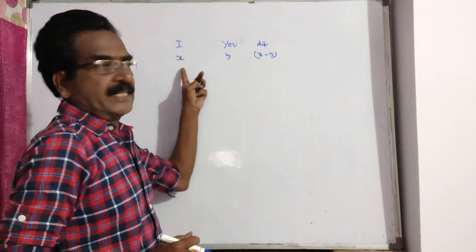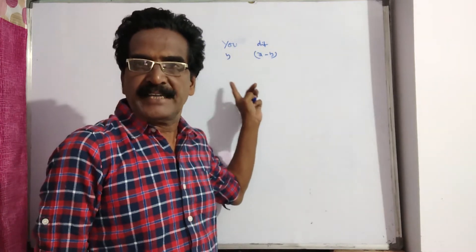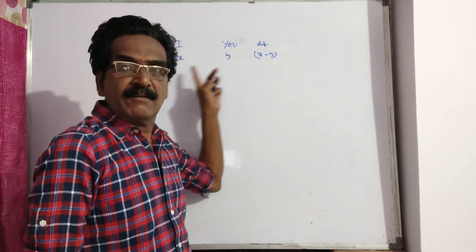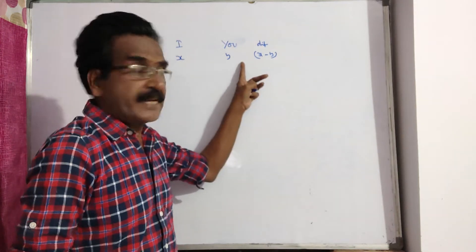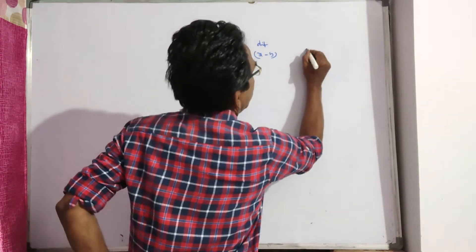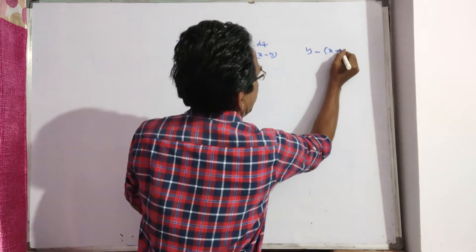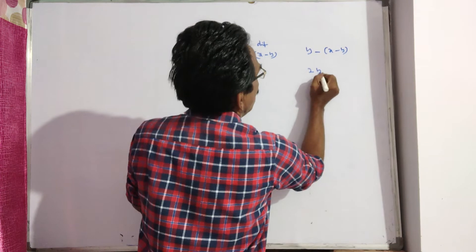Say I am X years and you are Y years. When I was at your age, then you will be Y minus their difference X minus Y, that is equal to 2Y minus X.